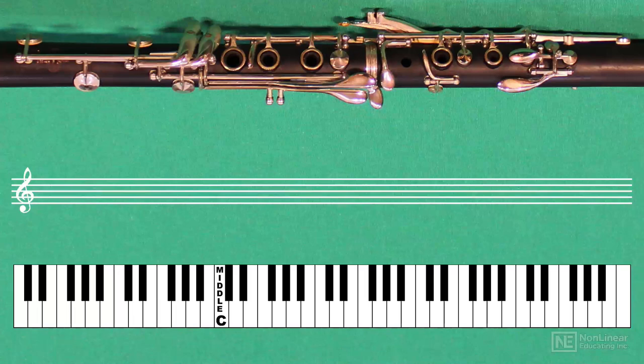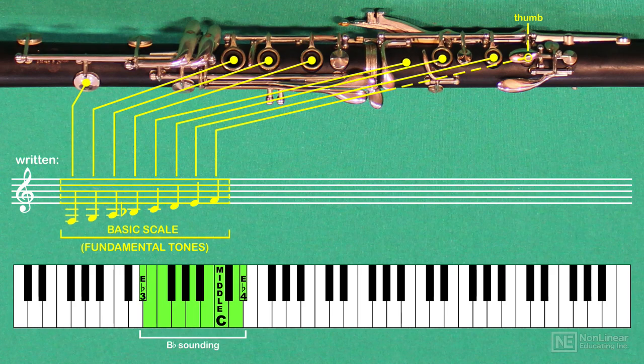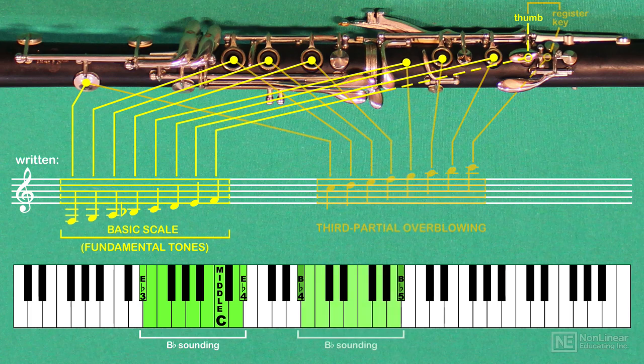You can see the problem immediately. Without fingering systems of keys and levers, the clarinetist would be at a disadvantage. Playing a written F major fundamental scale with seven fingers, once the player reached F at the top of the scale, the next possible overblown note would be C — a perfect fifth higher — overblowing the third partial of the lowest F up an octave and a fifth.